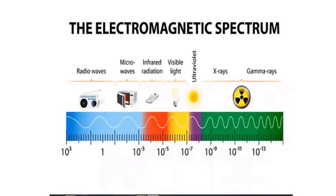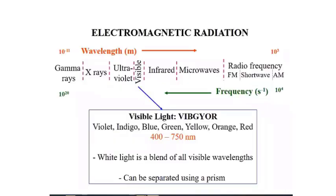This is the complete electromagnetic spectrum. It starts from gamma rays, then X-rays, then ultraviolet, then visible light, then infrared radiation, then microwaves, and then radio waves. The wavelength increases as we move from gamma rays towards radio waves.